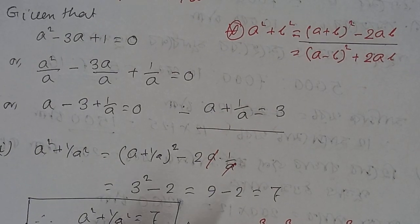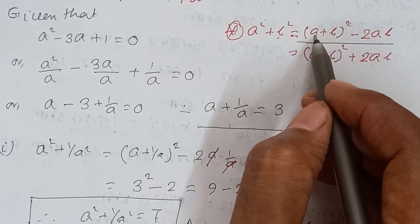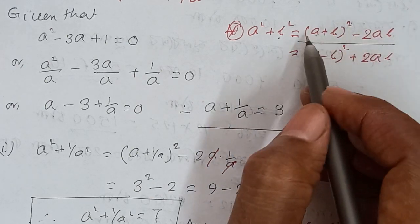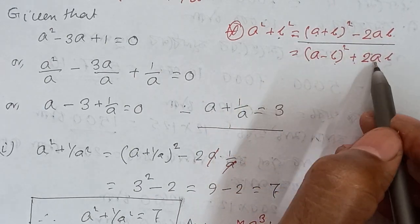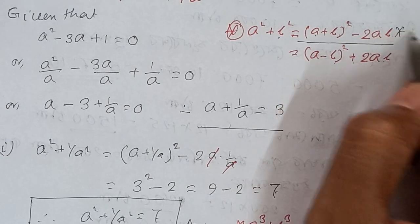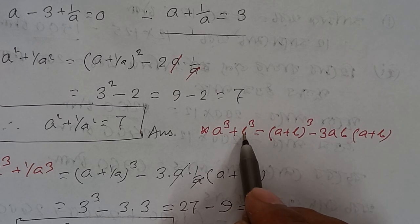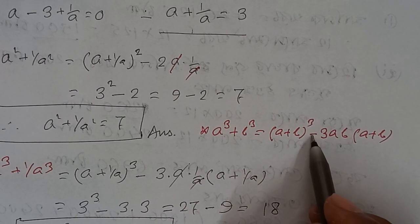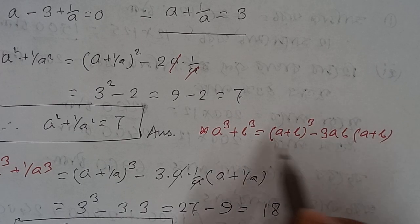To recap: the first formula used was a square plus b square equals a plus b whole square minus 2ab, or a minus b whole square plus 2ab. The second formula used was a cube plus b cube equals a plus b whole cube minus 3ab into a plus b.